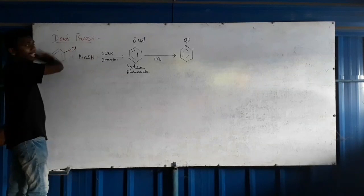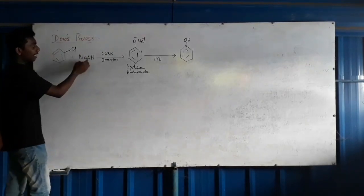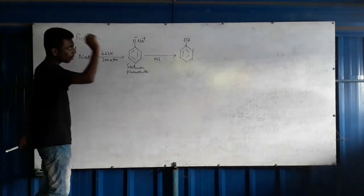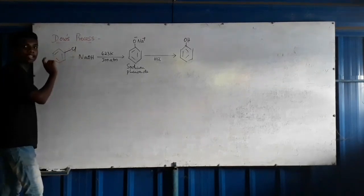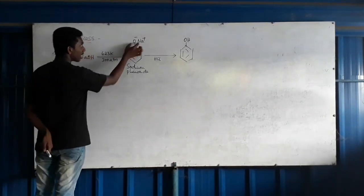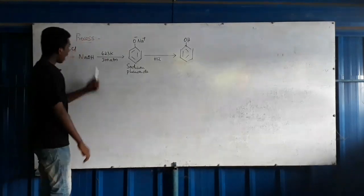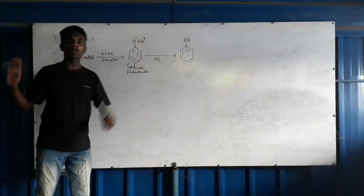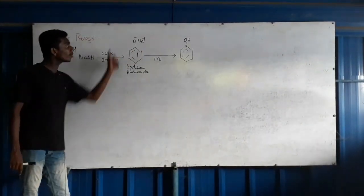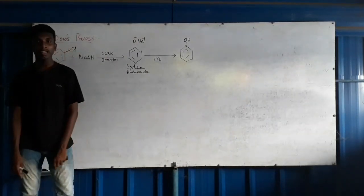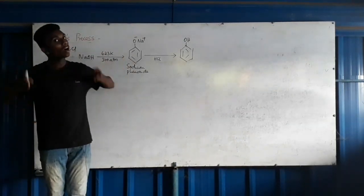That is why high temperature and high pressure are required. The reaction is: chlorobenzene + NaOH → sodium phenoxide + NaCl. The sodium phenoxide is then acidified with HCl to give phenol. That is why phenol is also called hydroxybenzene.